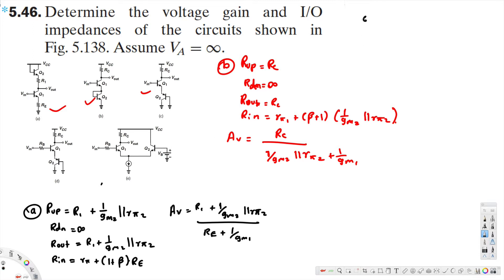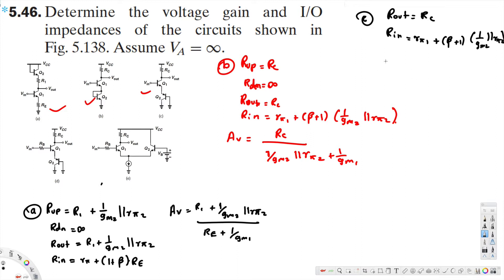For part C, the output impedance is Rc, and the input impedance is R51 plus (beta + 1) times (1/gm2 parallel R52). The voltage gain Av equals Rc divided by [(1/gm2 parallel R52) parallel (1/gm1)].